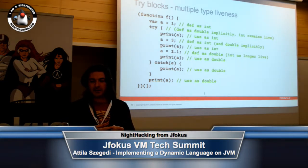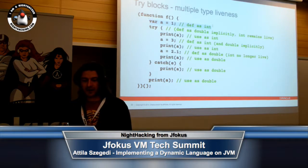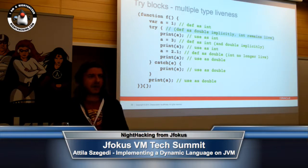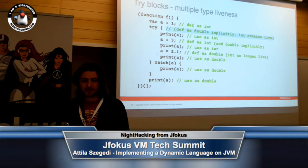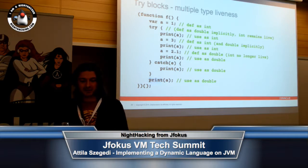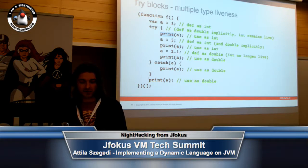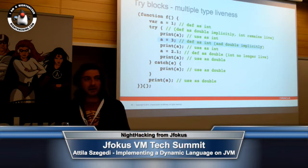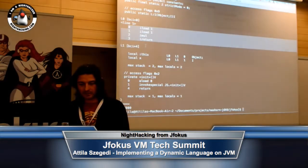We also have this trick where, in a try block, we can have variables be live for multiple types at the same time. In this example, in this line, a is clearly an int. However, when you enter the try block, we will actually define it in a separate bytecode slot as a double because it can actually become a double here. And we cannot prove that print doesn't throw. When we reach this join point, we must know — we have to have a definite static type, otherwise the JVM verifier will reject the code. So when it comes out here, it must be a double. And since we cannot prove that the print function won't throw an exception, we must make sure that even if execution reaches here, it exists as a defined double value.